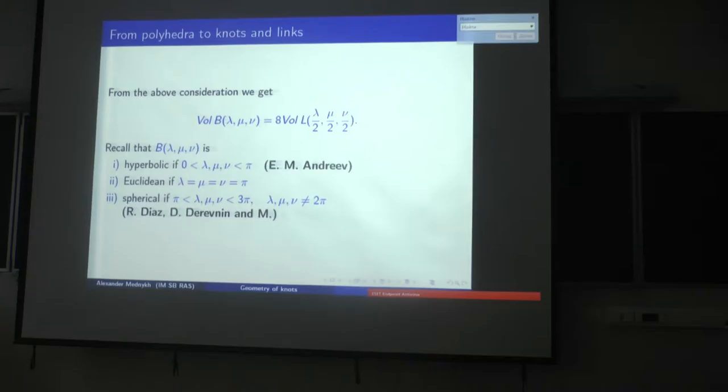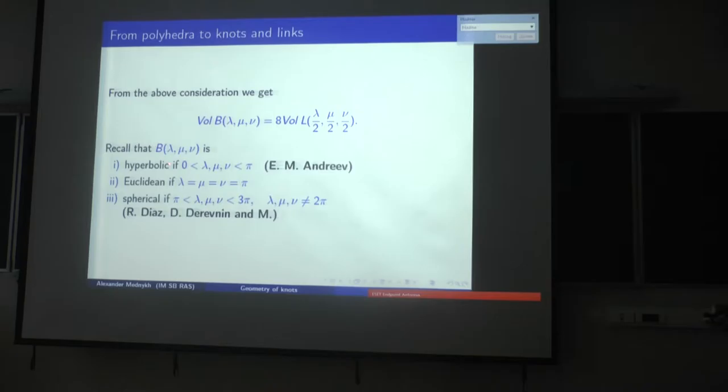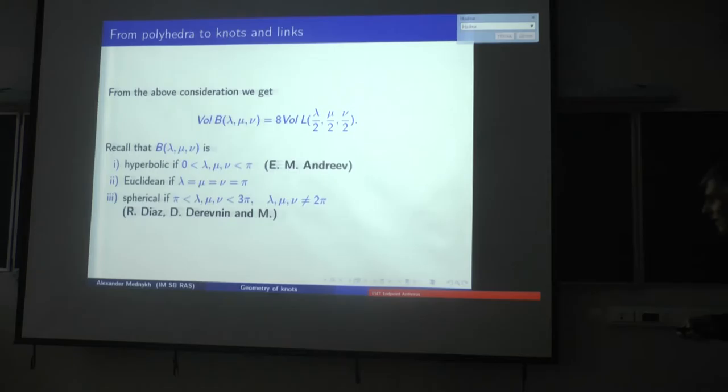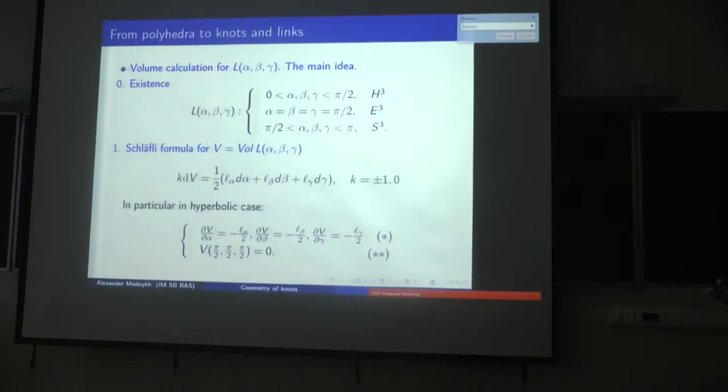Now, the realization problem. In the hyperbolic case, the realization problem for convex polyhedra was solved by Andreev, a former student of Professor Vinberg. In this case, the conditions are quite simple: the dihedral angle is between zero and pi. The Euclidean case was also shown before. In the spherical case, we have to use angles bigger than pi. This means that in these three cases we have exactly three possibilities for geometrical realization.